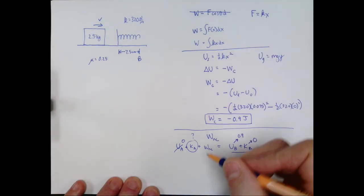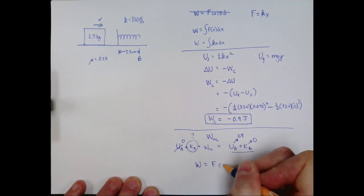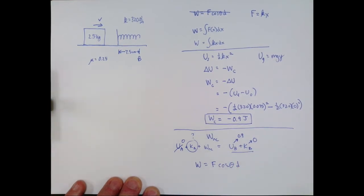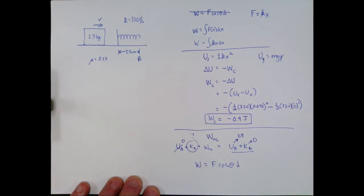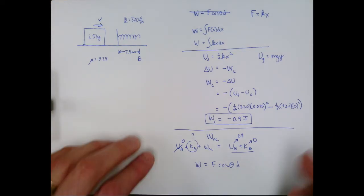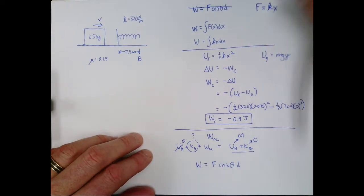Well, how about this right here? Work equals F cosine theta d. Friction is a constant force. And so if I can calculate how big the force of friction is, and I know the distance, it's 7.5 centimeters, I should be able to answer this question. So let's calculate the force of friction. Of course, maybe I'll do this on another page so it's not so crowded.